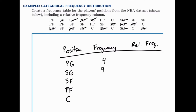For small forwards, we have one, two, three, four, five, six, seven. For power forwards, we have one, two, three, four, and five. And then for centers, we have one, two, three, four, and five.